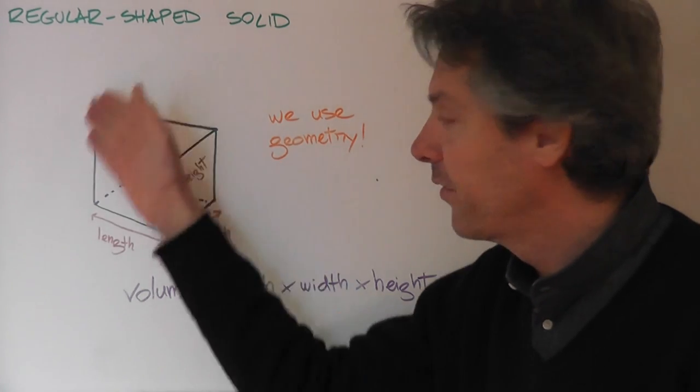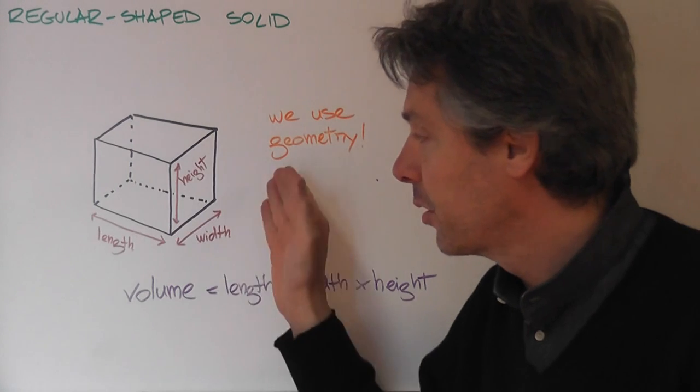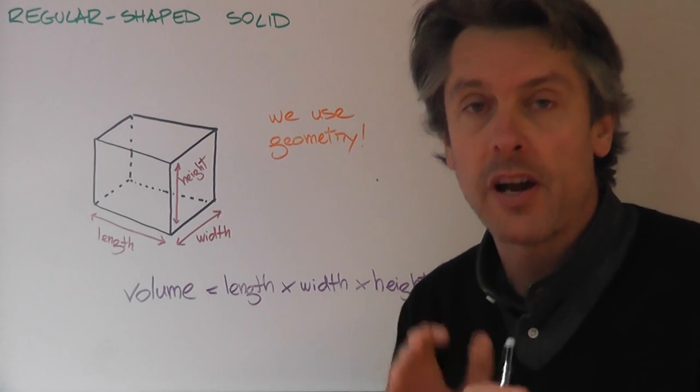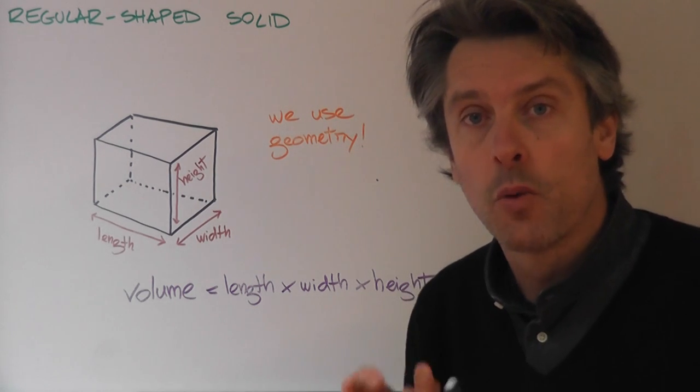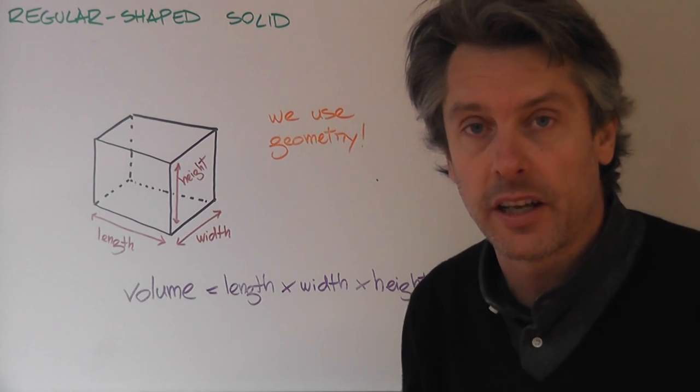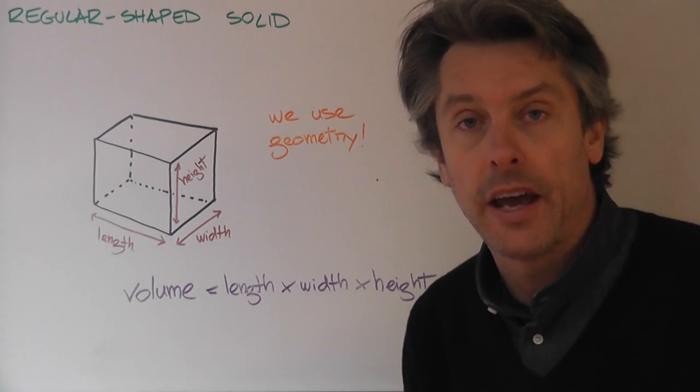So let's, for instance, take a look at this example. This is a rectangular prism, so it's a very regular shaped object. And in this case, we're not going to measure directly, but we're going to use geometry.